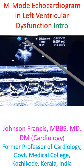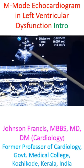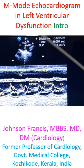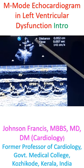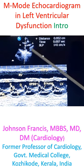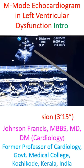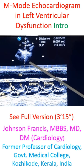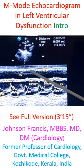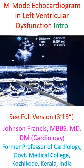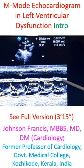The RVOT — right ventricular outflow tract region — is also dilated. There is probably associated pulmonary hypertension as well. But in this view, we will not be able to comment much on the right ventricle. This is the right ventricular free wall. This is the interventricular septal motion.